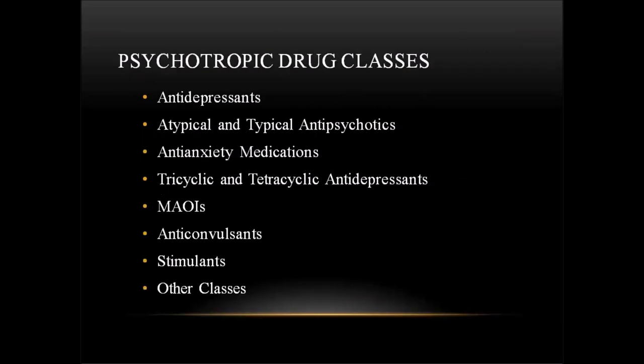Let's take a look at the psychotropic drug classes covered in this video. First we have the antidepressants, and the atypical and typical antipsychotics, antianxiety medications, tricyclic and tetracyclic antidepressants, monoamine oxidase inhibitors — also known as MAOIs — anticonvulsants, stimulants, and a few other classes of medications.